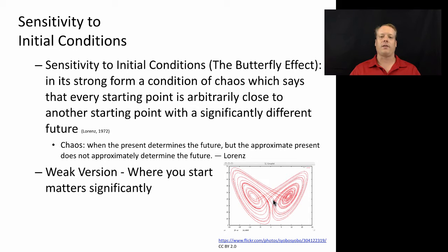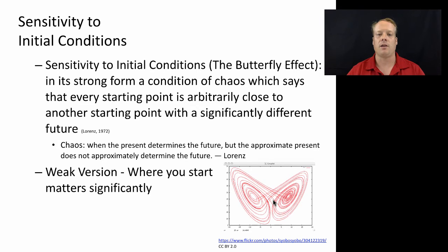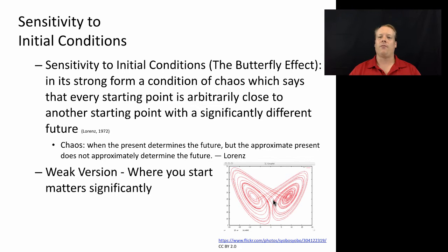In Lorenz's case, it was discovered that when he tried to restart a model he had been running, it wound up in a different place because he didn't have the same resolution on the input values. Lorenz paraphrased this to say that chaos is when the present determines the future, but the approximate present does not approximately determine the future. We don't really know, if we're close to the initial conditions, whether we're going to get an accurate prediction at all. This is also sometimes called the butterfly effect — the idea that if a bird flaps its wings in China, that may cause a tornado to form over Texas, because small perturbations can dramatically affect the outcome.